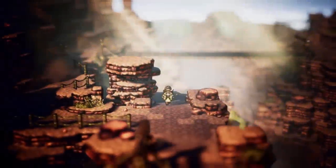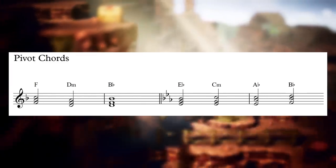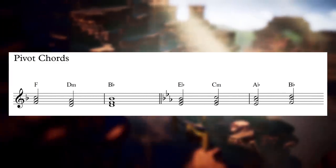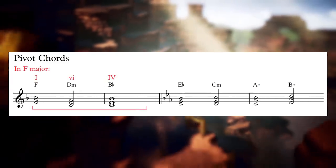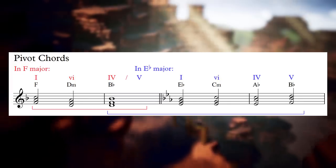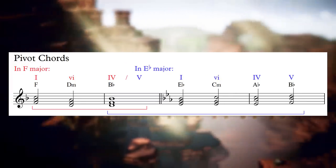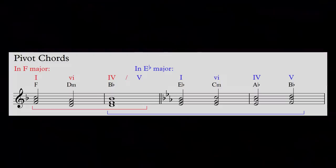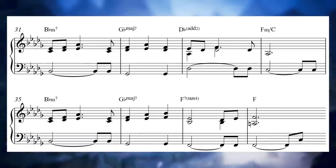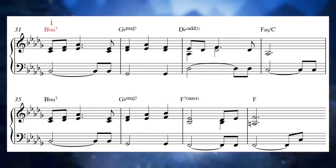The most basic of modulation techniques are called pivot chords. A pivot chord is one that fits and functions in both the original key of the tune and the new destination key, providing a way to smooth out the transition from one key to another. In the Frostlands theme, we start in the key of Bb minor and set up a repeating chord progression of 1, b6, b3, 5.